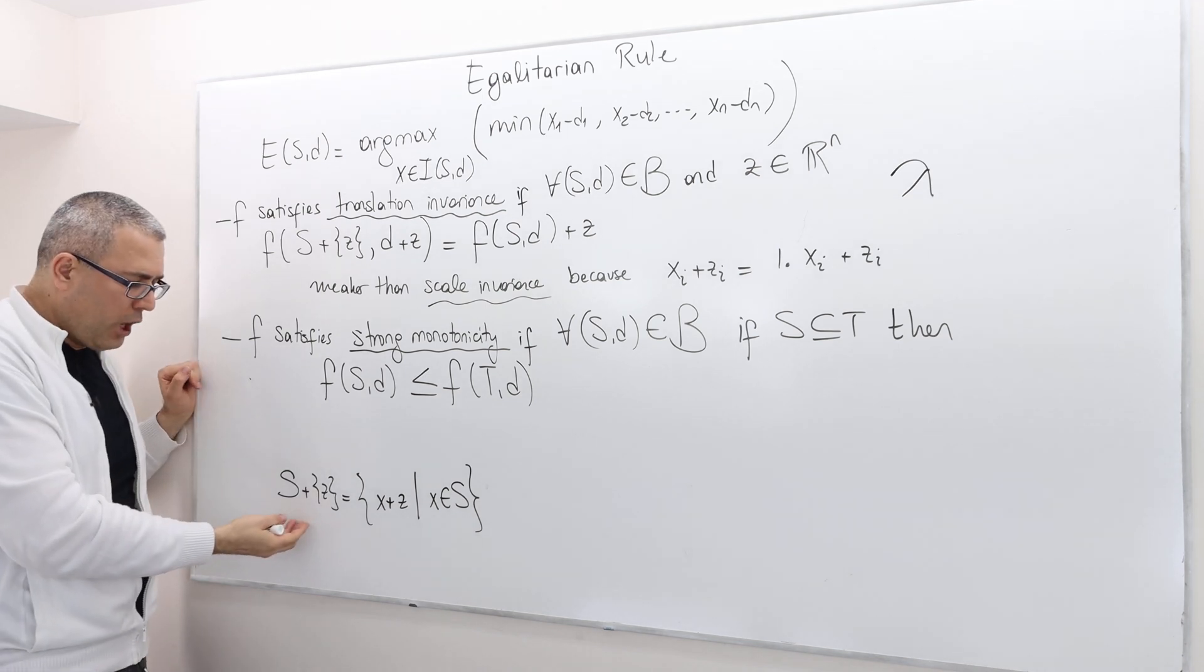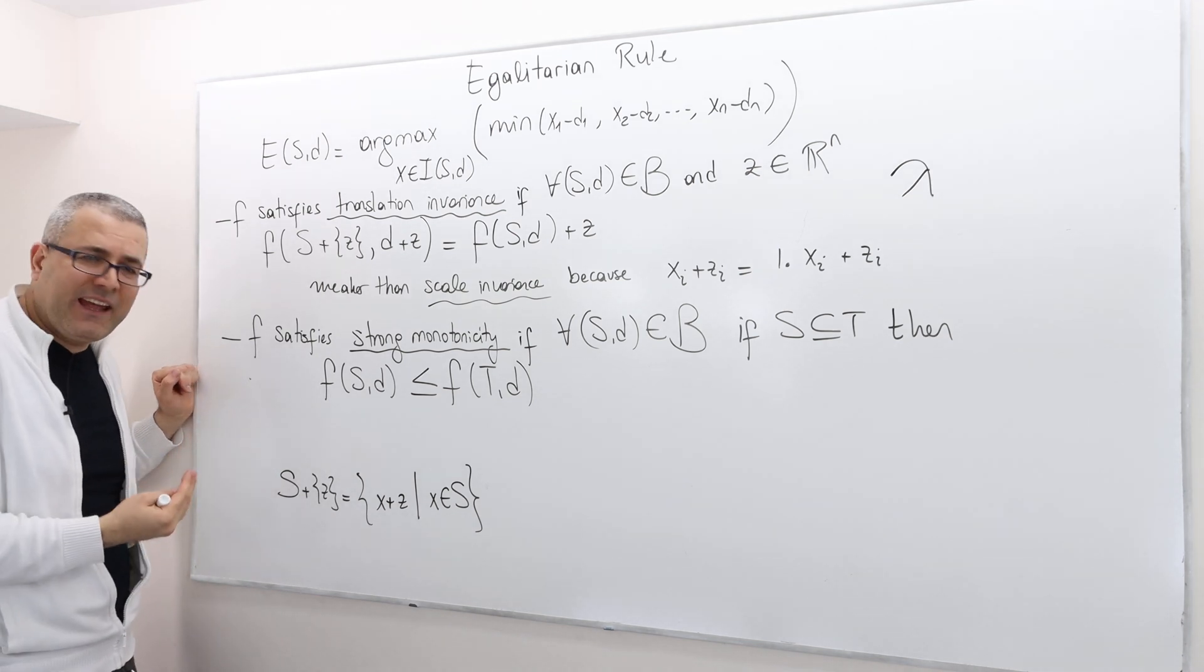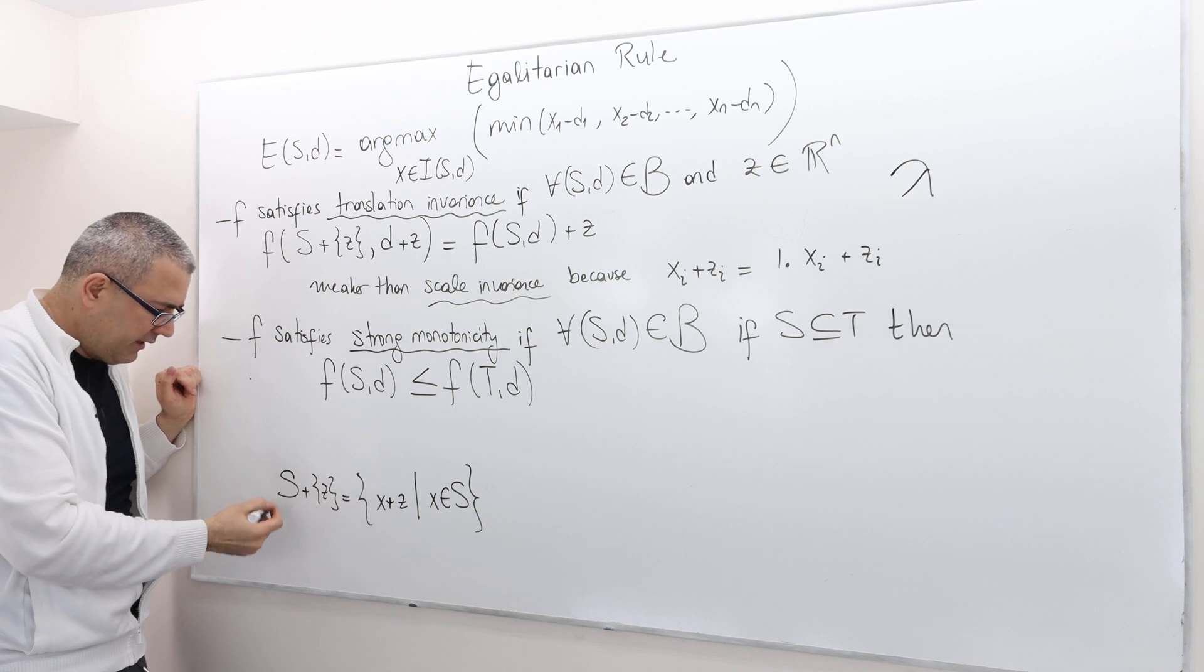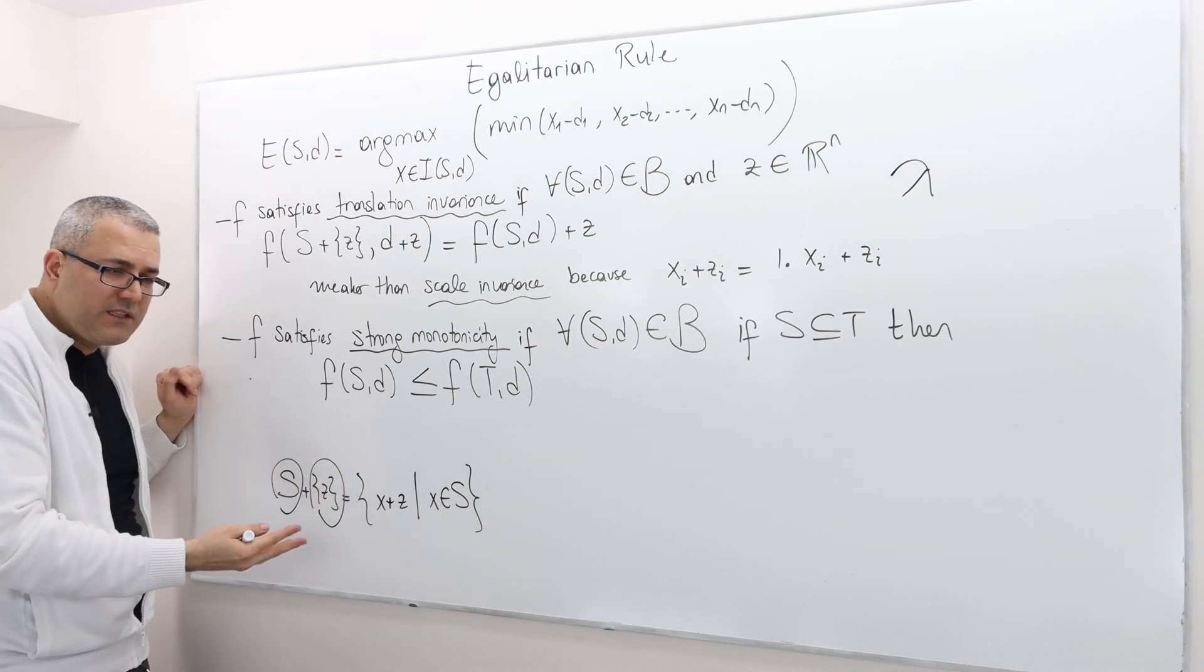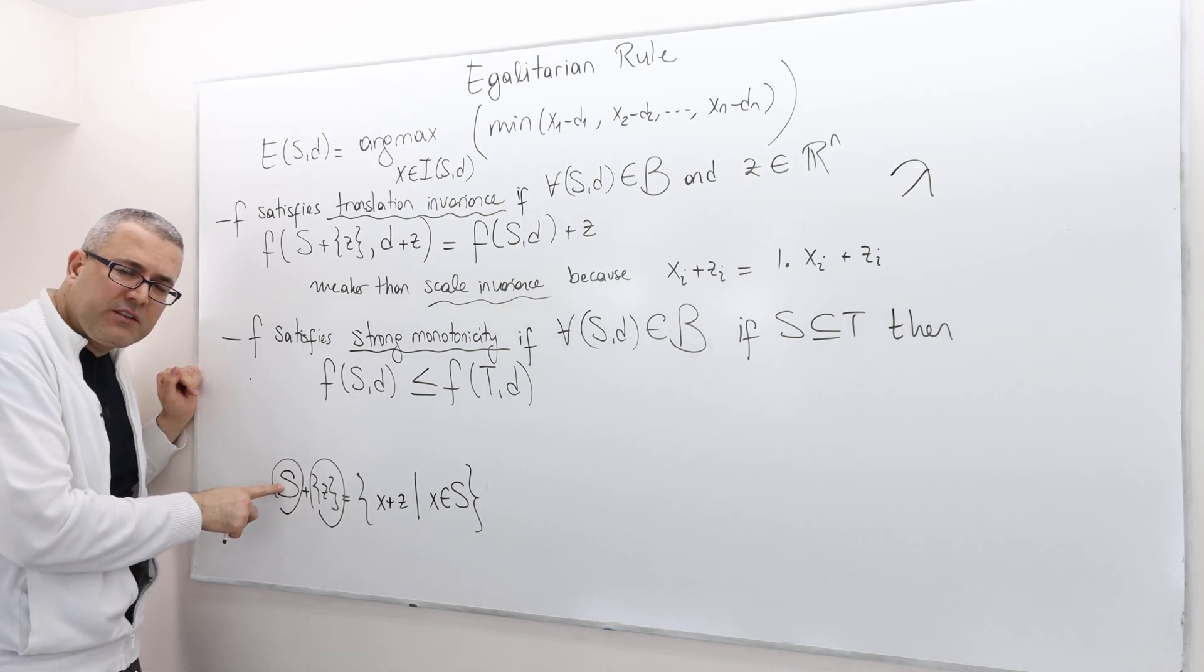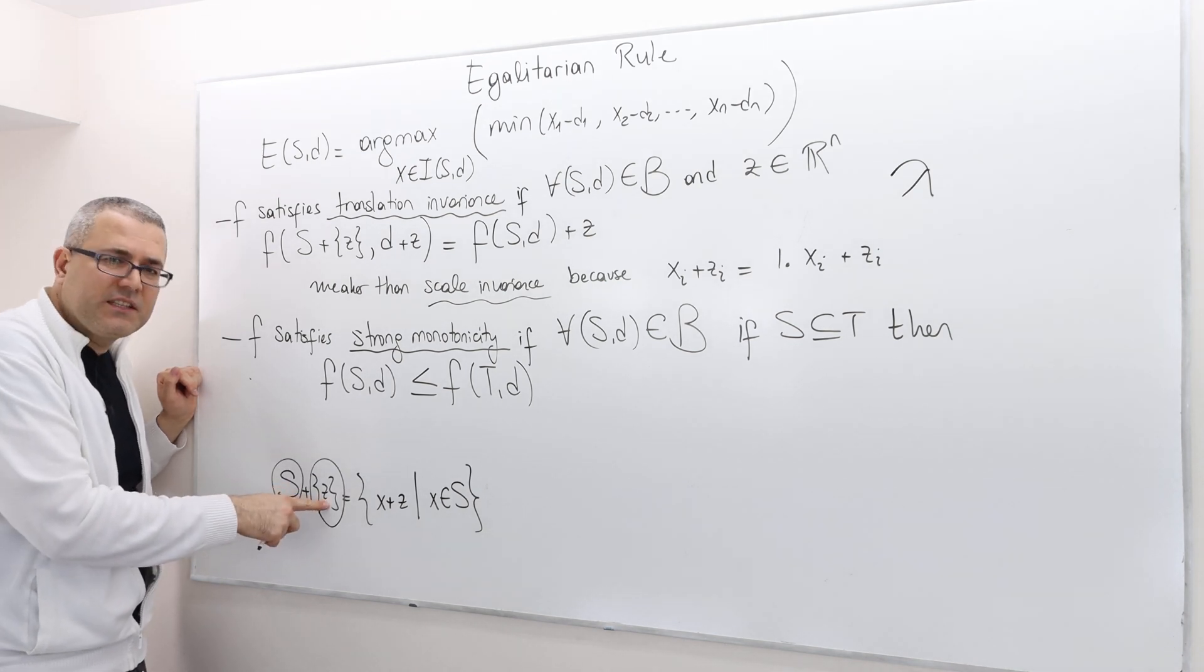By the way, for those who don't know how we can add two sets—this is a set, this is also a set which has only one element—it's simple. I basically add every vector in here with this vector Z.